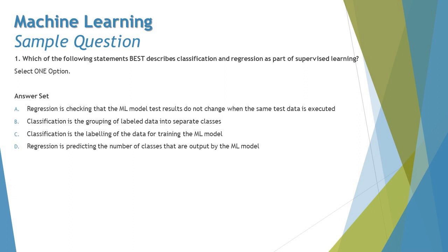Option A says: regression is checking that the ML model test results do not change when the same test data is executed. This is completely incorrect. Regression in the context of supervised learning is when the ML model outputs a numeric result. We have to be careful not to confuse this with the definition used in traditional testing — the definitions are different here.